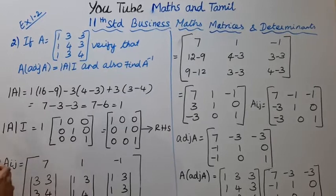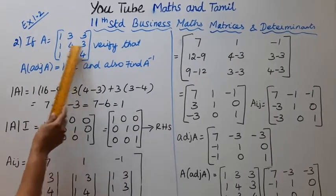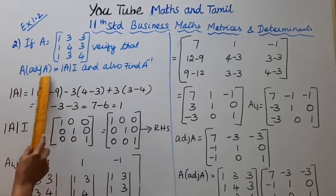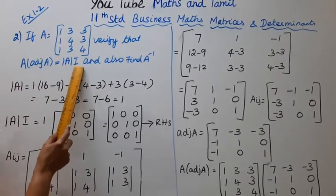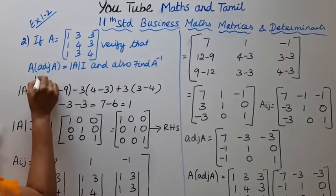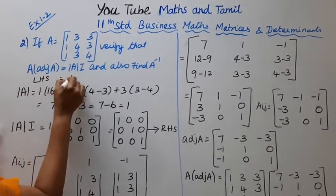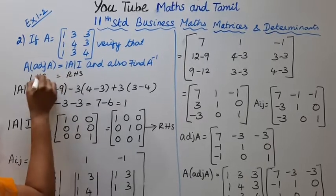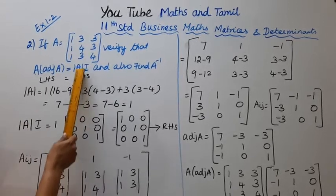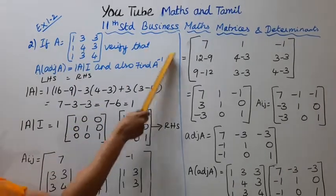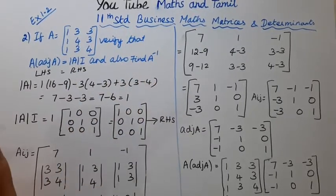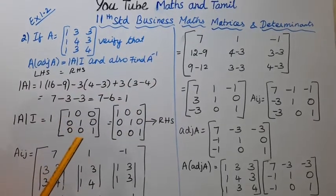If A equals the matrix [1,3,3; 1,4,3; 1,3,4], verify that A into adjoint A equals determinant A into I, and also find A inverse. The formula for A inverse is 1 by determinant A into adjoint A.